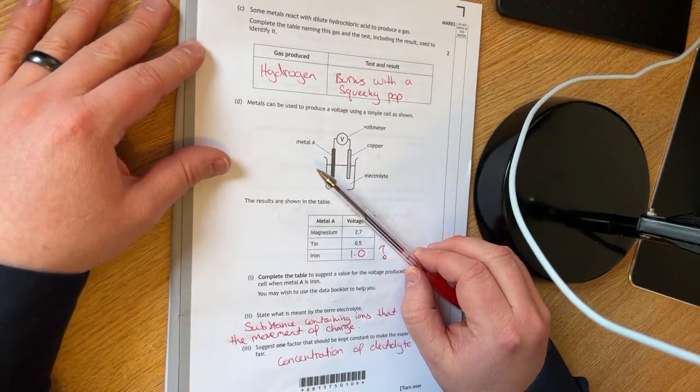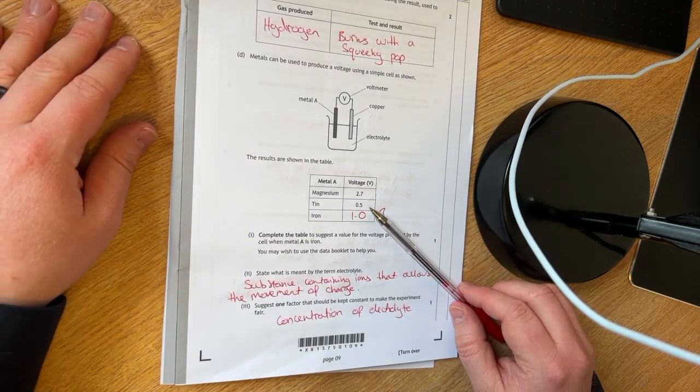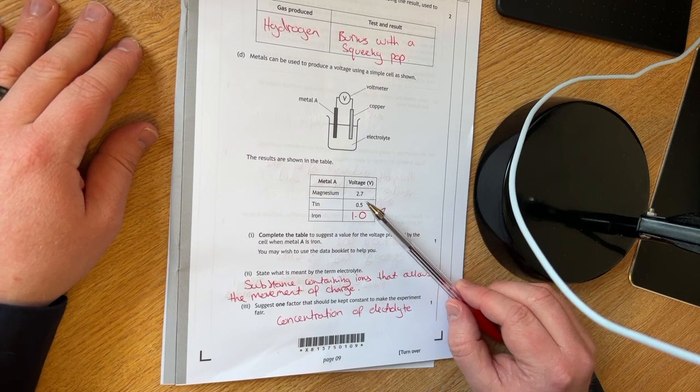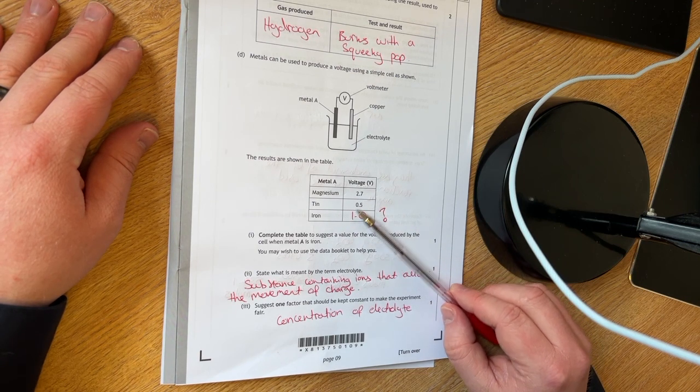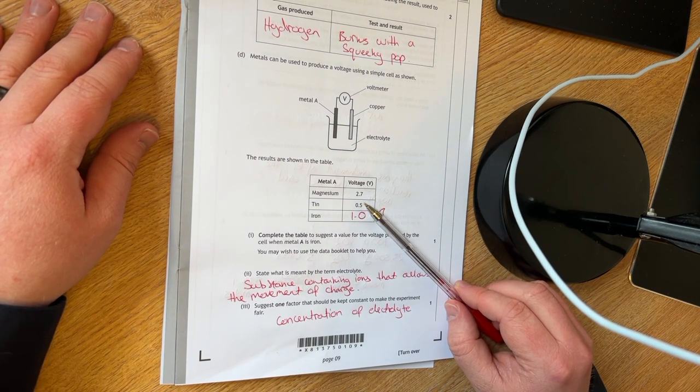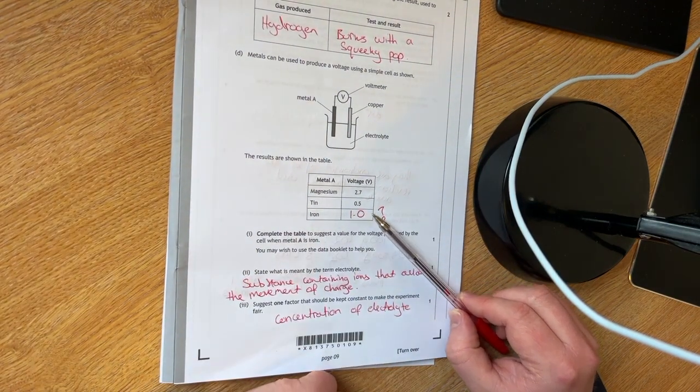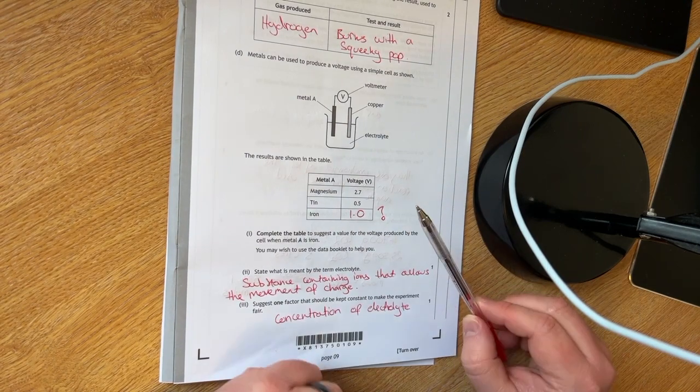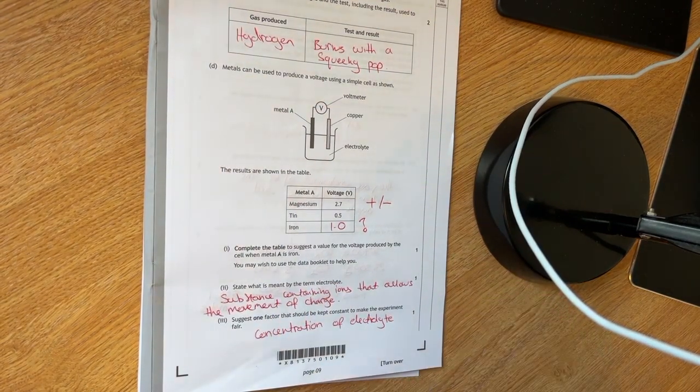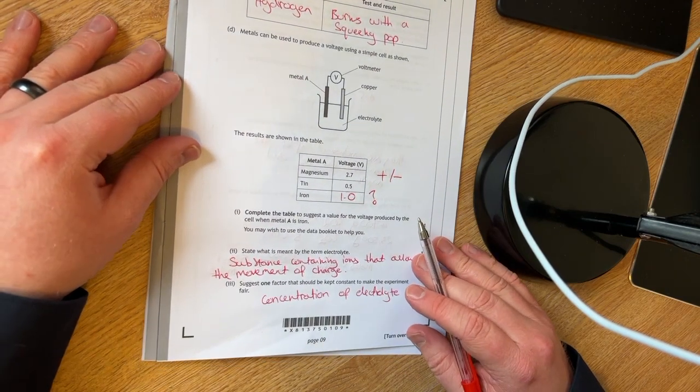Question D. It shows an electrochemical cell. You were to compare the voltages that you get and you'll see that iron sits in the middle, but closer to tin in the electrochemical series. So I went for one volt. However, this will be interesting. I'll put a question mark next to it. I'm not sure what the plus or minus is going to be on that.